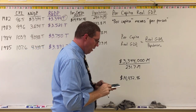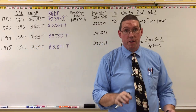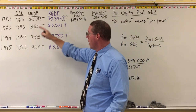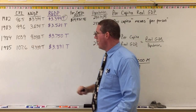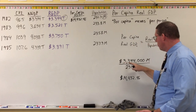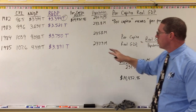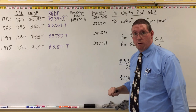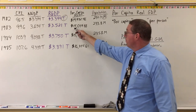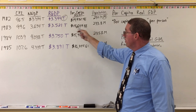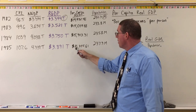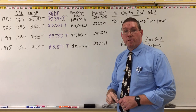Now I want you to pause the video and calculate per capita real GDP for 83, 84, and 85 using these numbers. But don't forget to move the decimal point over, because we're going to turn the real GDP into millions so that we get a correct number. Here are your answers: I got $15,059.88 for 1983, $15,903.31 for 84, and $16,355.61 for 1985.